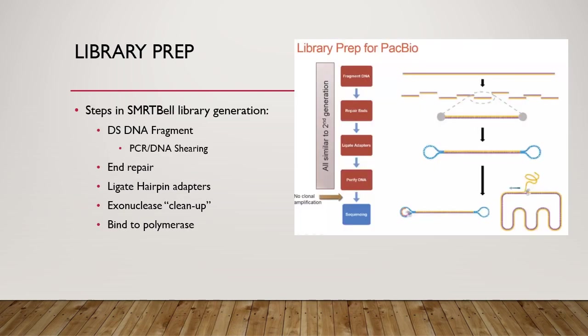Now let's talk about the steps in SMRTbell Library generation. First, obtain the appropriate size double-stranded DNA fragment, which you can get from random shearing of DNA or by PCR. The next step is to repair the ends with the reagent provided in the kit. Then, ligate your hairpin adapters onto your double-stranded fragments. Now clean up your DNA with exonucleases — there is no need to do an additional PCR step here because your DNA is already purified. Lastly, bind the sequencing primer to your DNA polymerase.